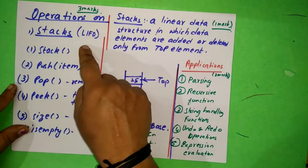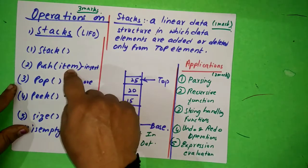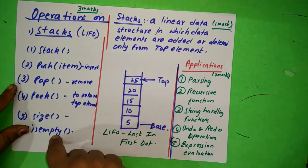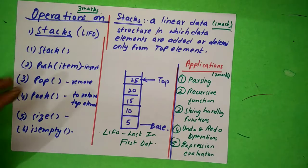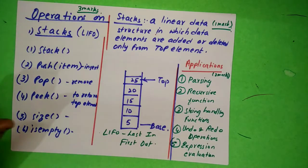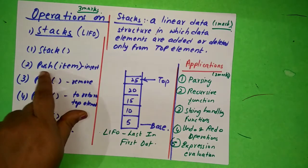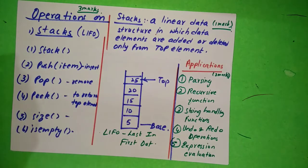What are the operations on stacks? You have stack, push item, pop, peek, size, and is empty. This was asked for actually five marks also once. When asked for explain, the word explain comes, you have to write one line about it. If you simply write push item, they won't give you any marks.